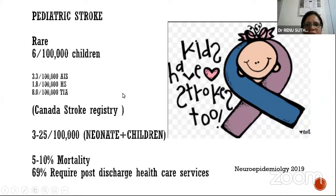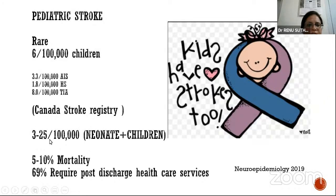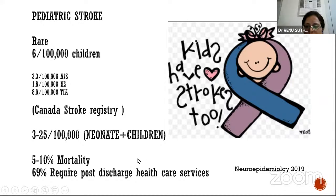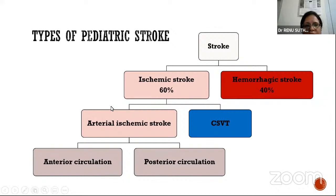Pediatric stroke is rare compared to adult stroke, but not uncommon. We often see these patients in the emergency room diagnosed as stroke mimics or febrile encephalopathy. The incidence is 6 per 1 lakh children from Canadian stroke registry data; including neonates, it goes up to approximately 25 per 1 lakh. Stroke has high mortality — about 5 to 10% of children die — and about two-thirds require continuous neurological care due to persistent disabilities and epilepsy. Stroke classification includes ischemic and hemorrhagic, in approximately a 60:40 proportion.